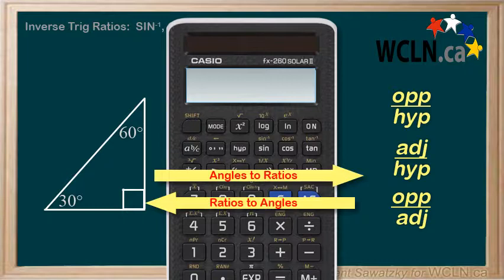On a calculator, these inverse functions are typically found right above the trig functions as a second function. That is, you typically have to click Shift and then the trig button.